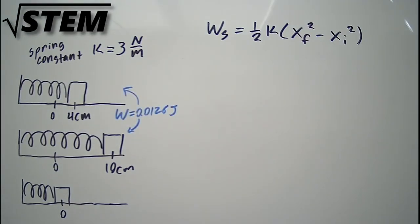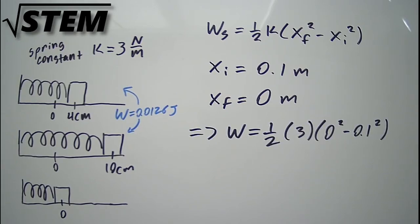When we release the block, its initial x position will be 10 centimeters or 0.1 meters. Since we want to find the work done as it returns to its resting position, the final x position will be 0 centimeters, also 0 meters. And when we plug in those values, we'll get that the work done going from 10 centimeters to 0 is negative 0.015 joules.